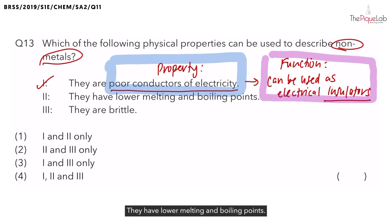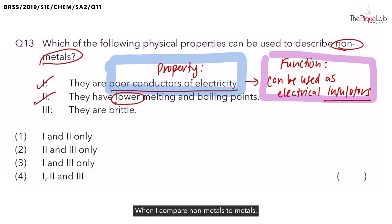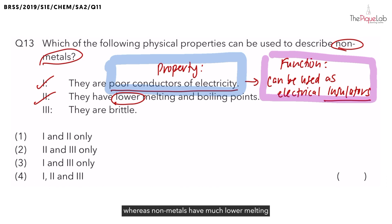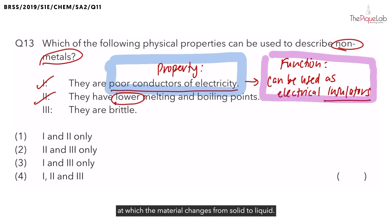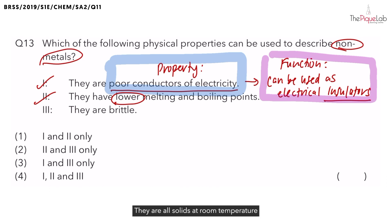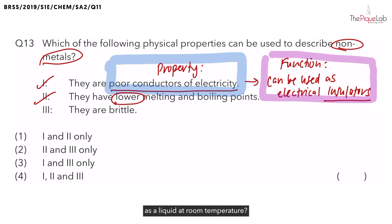Let's take a look at the second property: they have lower melting and boiling points. This statement is true. When I compare non-metals to metals, metals have a very high melting and boiling point, usually in the range of hundreds or thousands of degrees Celsius, whereas non-metals have much lower melting and boiling points. Melting point refers to the temperature at which a material changes from solid to liquid. Since metals need a very high temperature to melt, they are all solids at room temperature, except for one metal.